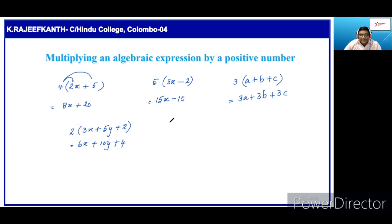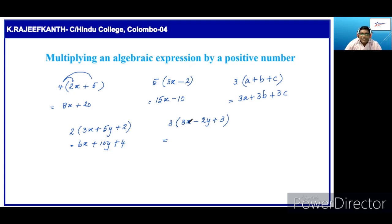Here, we will see one more example: 3 into 8x minus 2y plus 3. So, we should multiply each term of this expression. First term is 8x, then 3 into 8x is 24x. Minus 3 into 2y is 6y. Plus, 3 into 3 is 9.